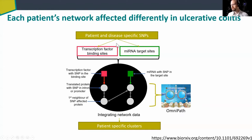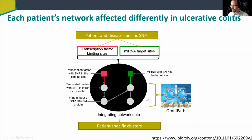We collected patient-specific single nucleotide polymorphisms and mapped them to transcription factor binding sites or microRNA target sites — basically regulatory SNPs. We then looked at which of those genes are in Omnipath, which have an altered transcription factor or microRNA target site, and their interaction partners as well. We integrated network data with patient-specific clustering. This is how the network looks for SNP-affected proteins and their interactor partners across roughly 600 patients.